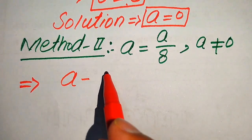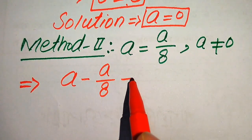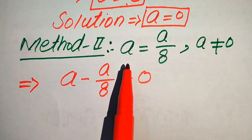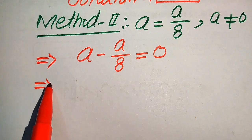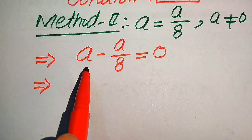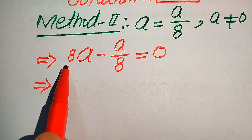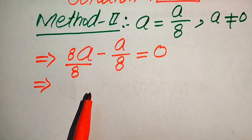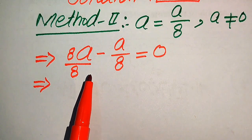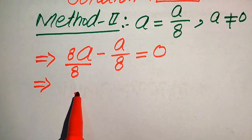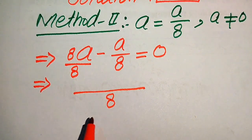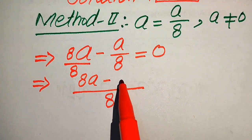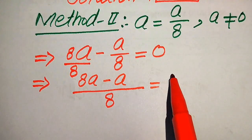It will be written as a minus a over 8 is equals to 0. In order to take the LCM, we need to make the denominators the same, so we multiply the first term by 8 over 8. The denominators of both terms become 8, so we take the LCM and get 8a minus a is equals to 0.